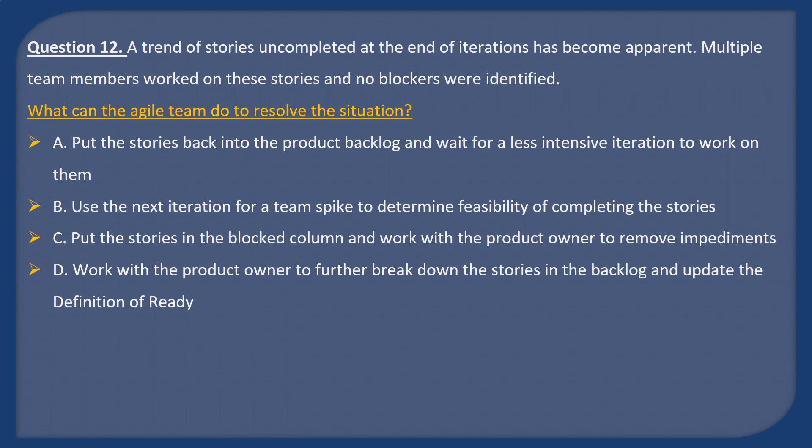Question 12. A pattern of stories uncompleted at the end of iterations has become apparent. Multiple team members worked on these stories and no blockers were identified. What can the Agile team do to resolve the situation? A: Put the stories back into the product backlog and wait for a less intensive iteration to work on them. B: Use the next iteration for a team spike to determine feasibility of completing the stories. C: Put the stories in the blocked column and work with the product owner to remove impediments. D: Work with the product owner to further break down the stories in the backlog and update the definition of ready.